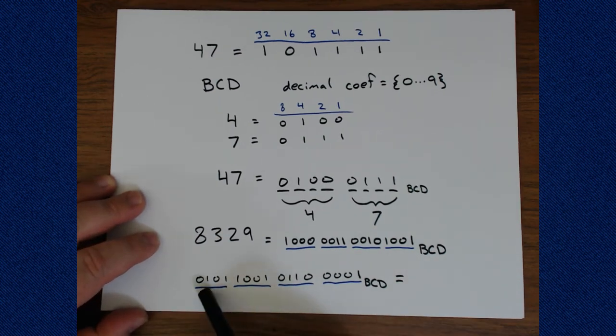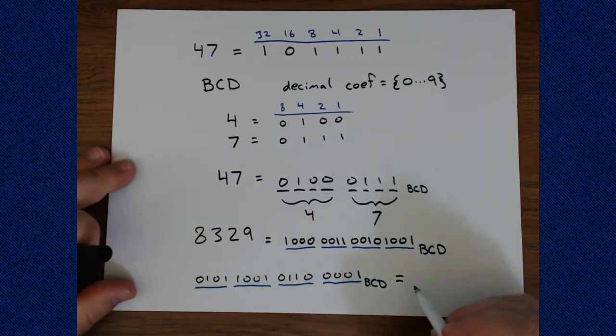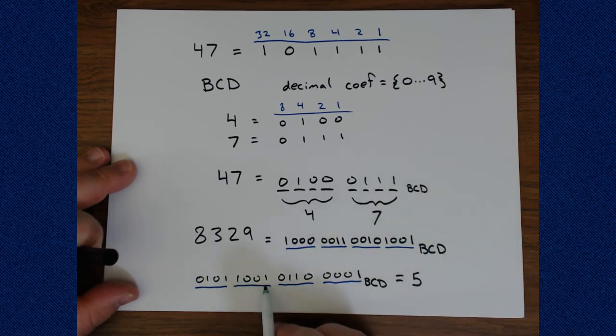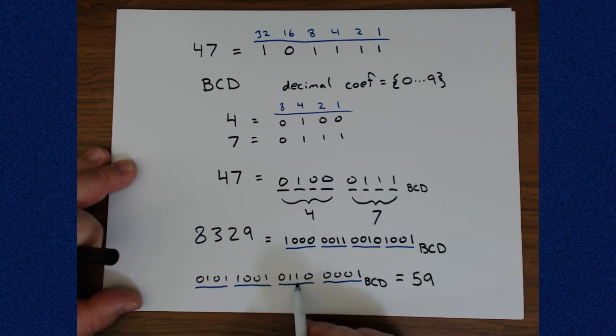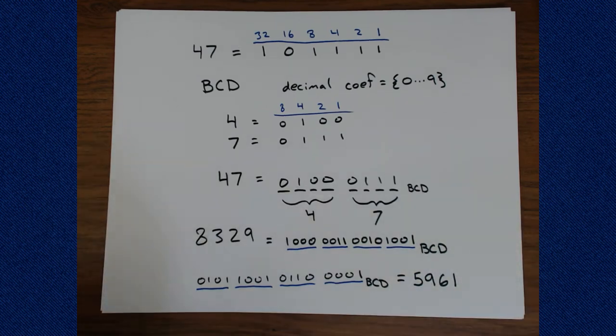So it should be pretty easy. This is the binary for 4 plus 1 is 5. This is the binary for 8 plus 1, that's 9. Here's the binary for 4 plus 2, 6. And here's the binary for 1, 1. And so we are able to do the conversion.